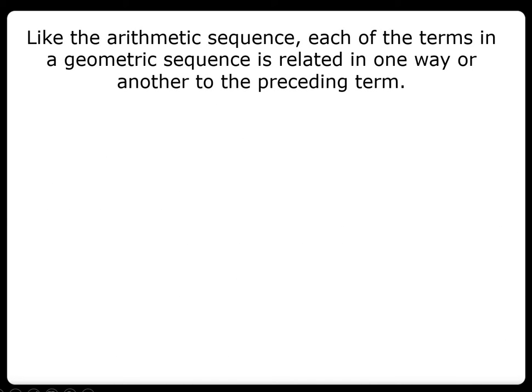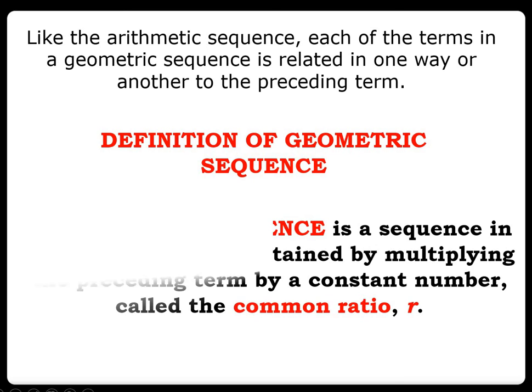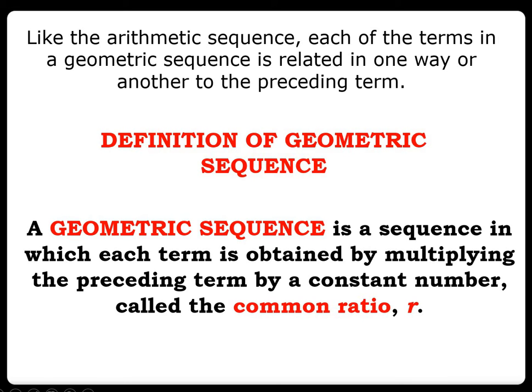Like the arithmetic sequence, each of the terms in a geometric sequence is related in one way or another to the preceding term. A geometric sequence is a sequence in which each term is obtained by multiplying the preceding term by a common number called a constant, named the common ratio with the symbol r.